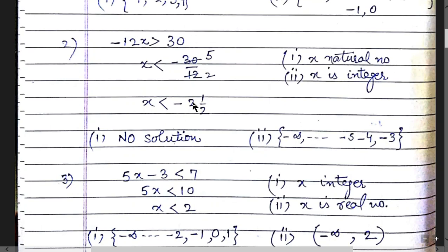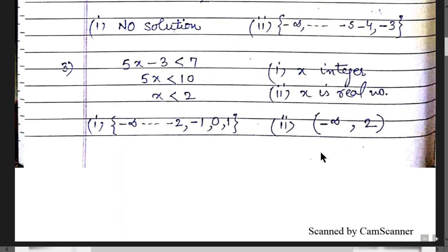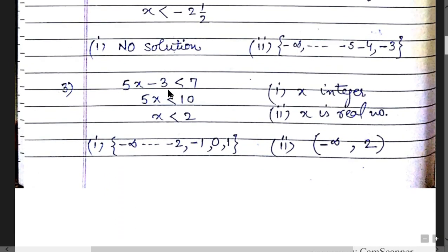If x is a natural number and x < -2.5, you cannot write any natural numbers because natural numbers are positive — so there is no solution. For integers, the values are -3, -4, -5, and so on up to minus infinity, written in interval notation as (-∞, -3].